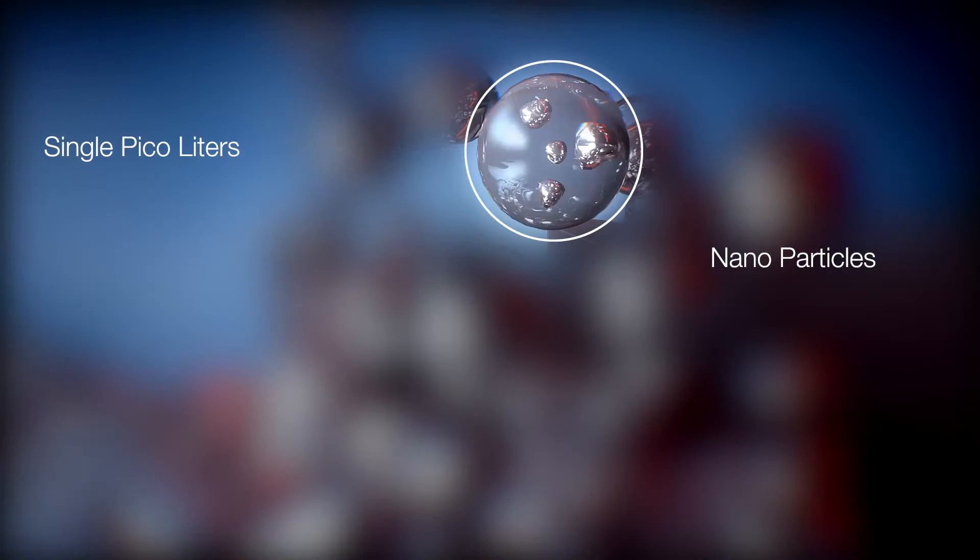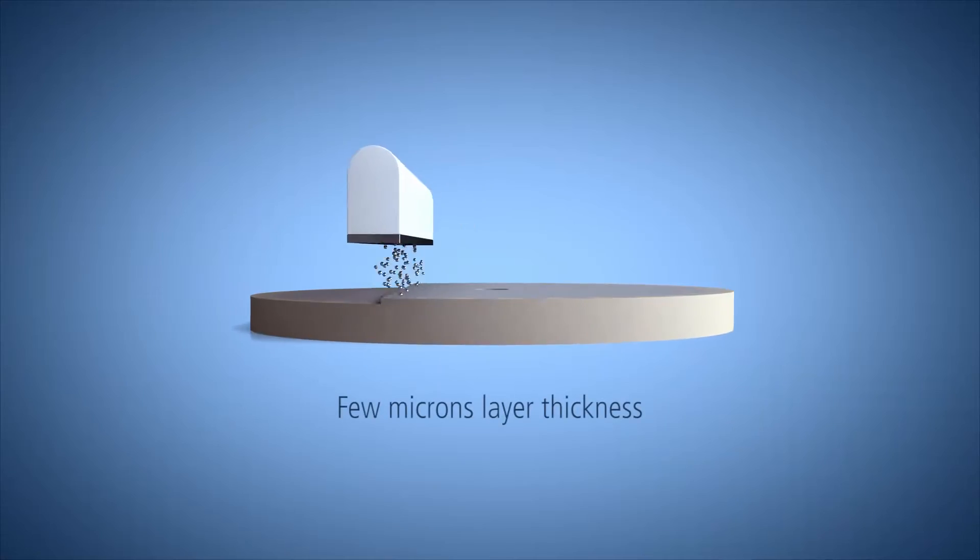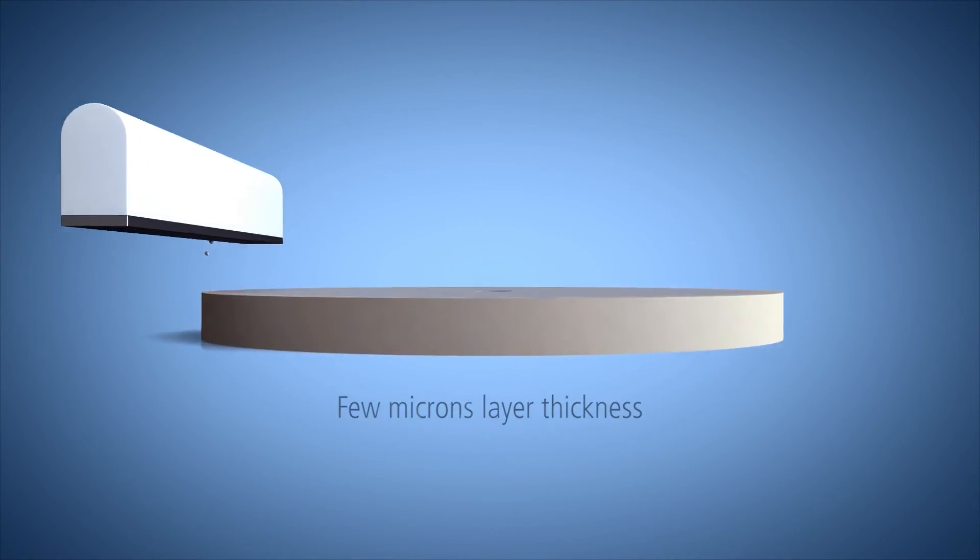The metal liquid formula and the support material are jetted from many thousands of printing nozzles simultaneously in a process that's up to five times faster than laser metal printers.